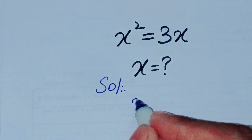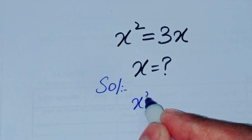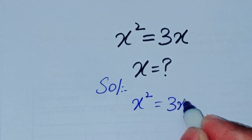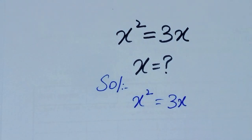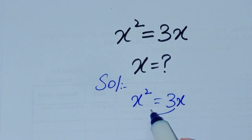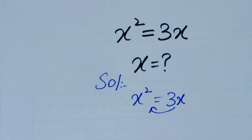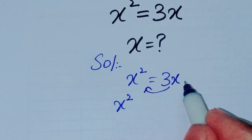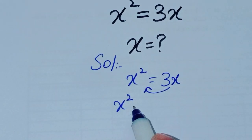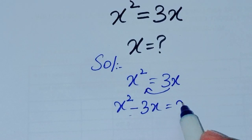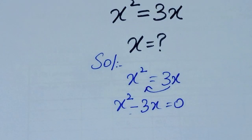x² = 3x. We shift 3x to the left side, so x² minus 3x is equal to 0.